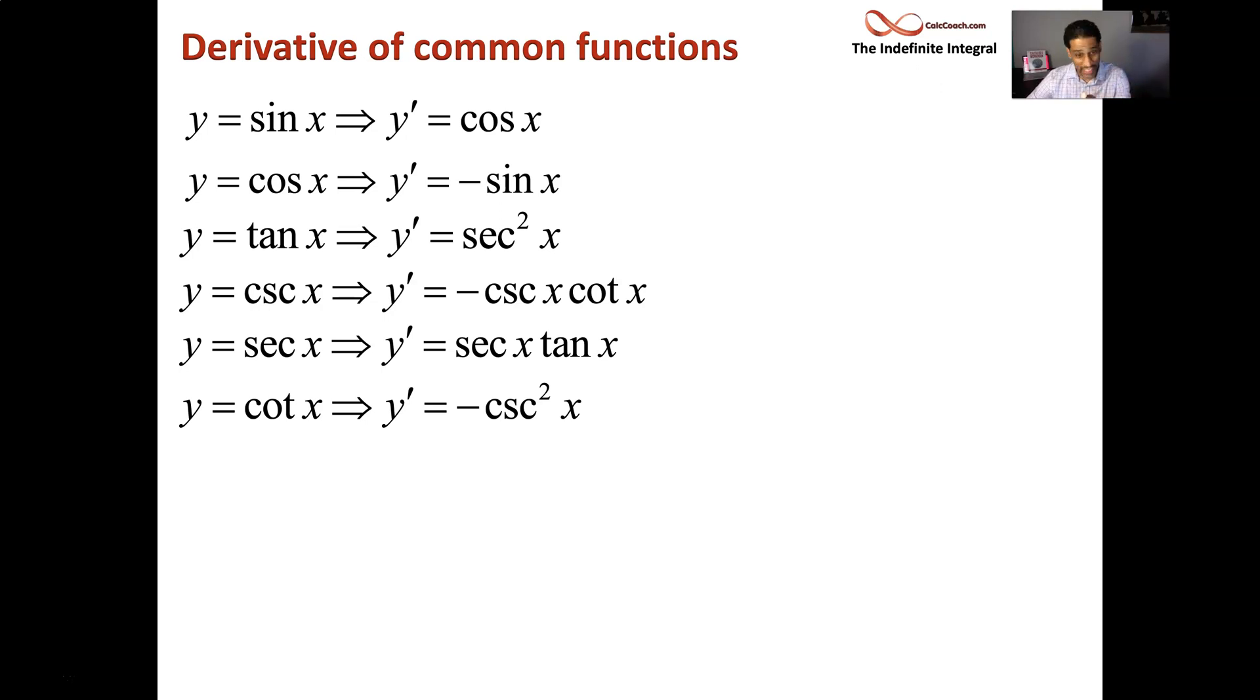So cosecant's derivative is negative cosecant cotangent, secant's derivative is secant tangent, and cotangent's derivative is negative cosecant squared. All right? So the six trig functions and their derivatives.